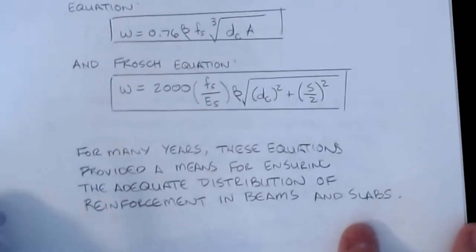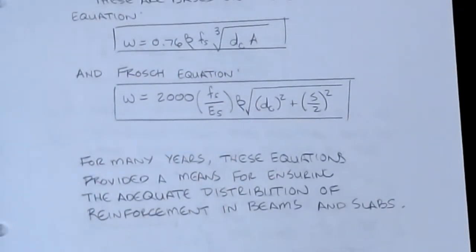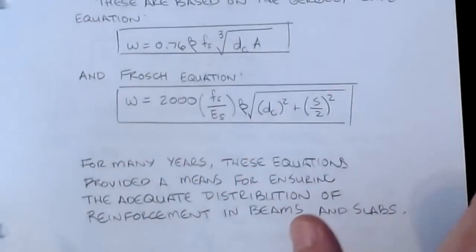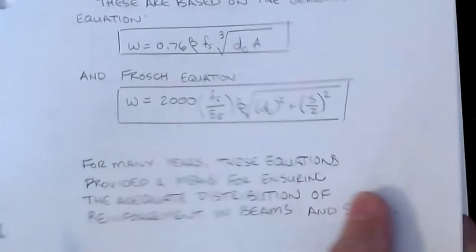The Frosch equation is 2,000 times fs over es times beta times the square root of dc squared plus s over 2 quantity squared. And so for many years, these equations provided a means for ensuring the adequate distribution of reinforcement in beams and slabs. What it does is it basically takes an effective area around the tensile reinforcing and calculates, it's almost like a percentage calculation, but with the distribution of the steel versus the area that it's responsible for preventing the tensile value.